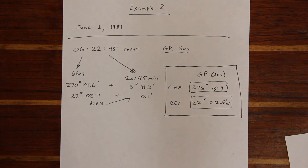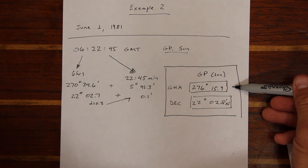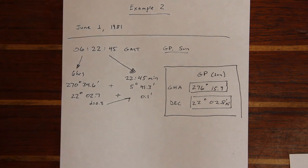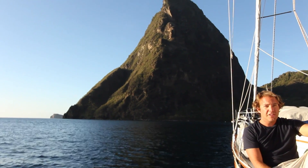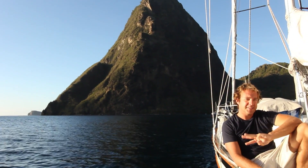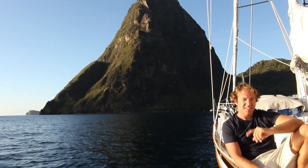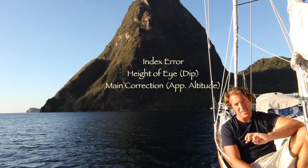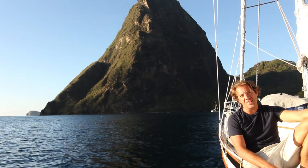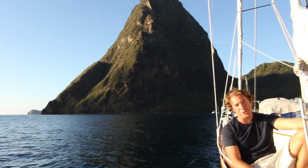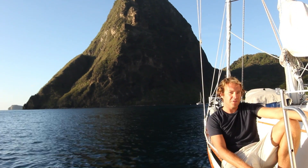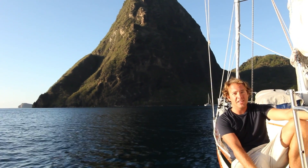The GHA of the sun is equivalent to its longitude, and the declination of the sun is equivalent to its latitude. In this fairly heavy episode, we've refined our accuracy by learning about the three main sextant corrections — index error, height of eye, and main correction. Additionally, we've refined our accuracy on declination and learned about Greenwich Hour Angle. Practice what you've learned, refer to the notes below, and when you're ready, we'll move on.